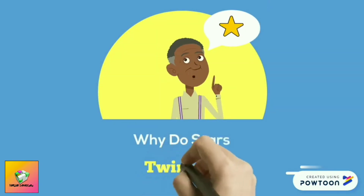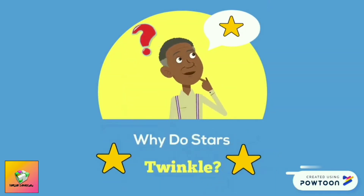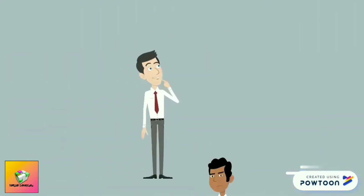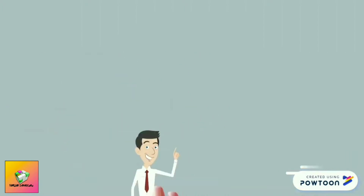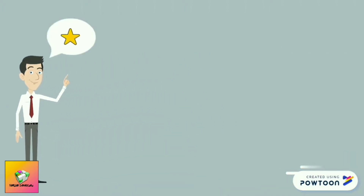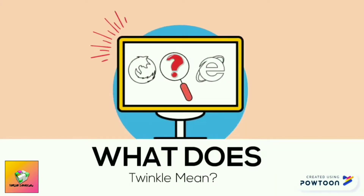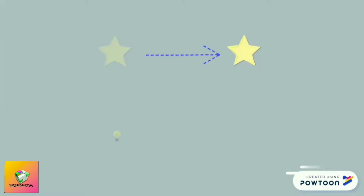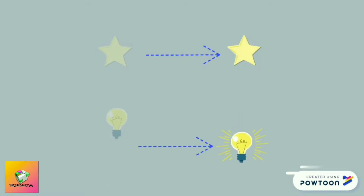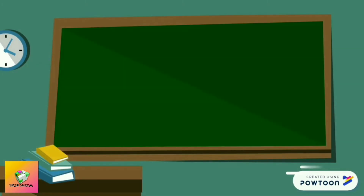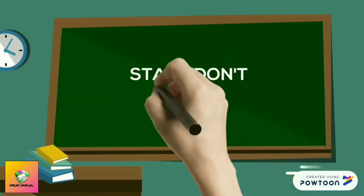Why do stars twinkle? This is a really good question, but for us to be able to answer this, we first need to know what 'twinkle' means. Twinkle means motion — it usually has to do with a star or a light that cycles between being bright to faint. Now knowing that, it could help us explain why such happens. But stars don't actually twinkle.